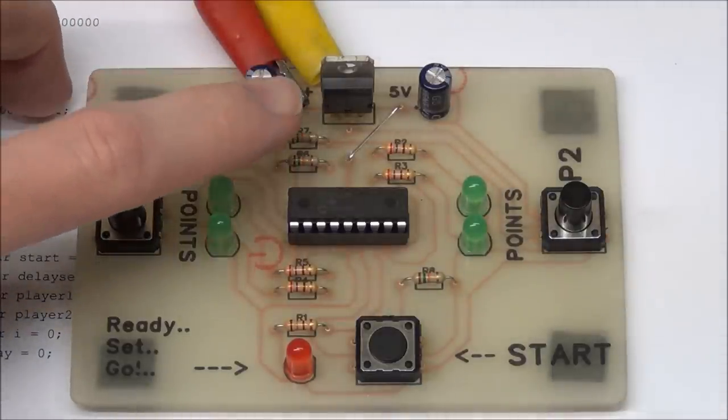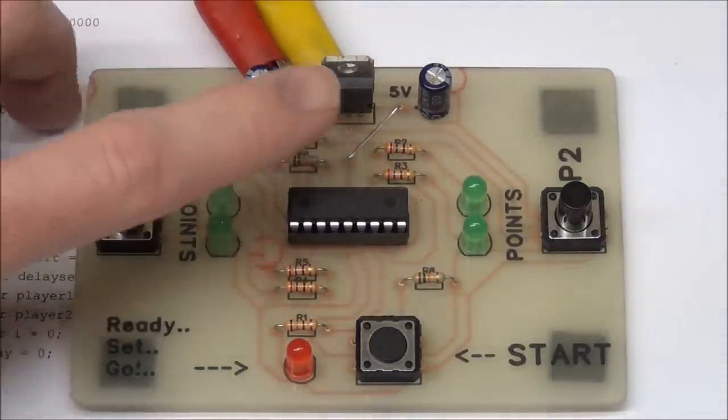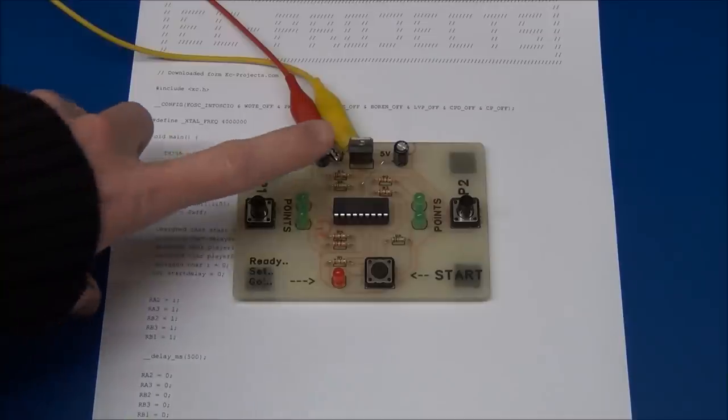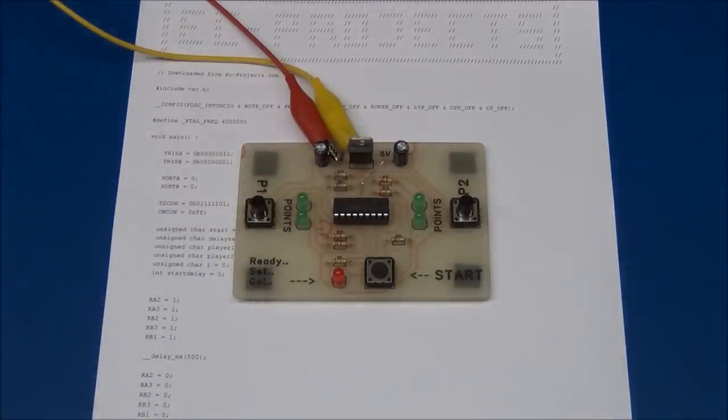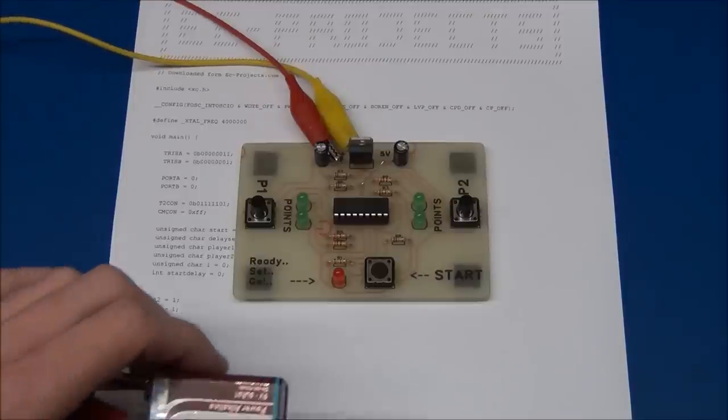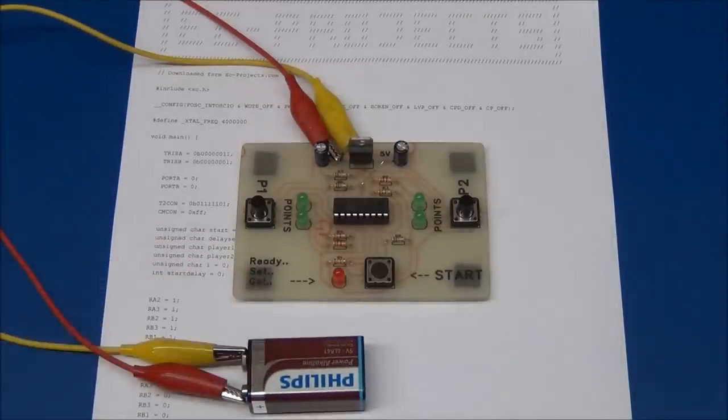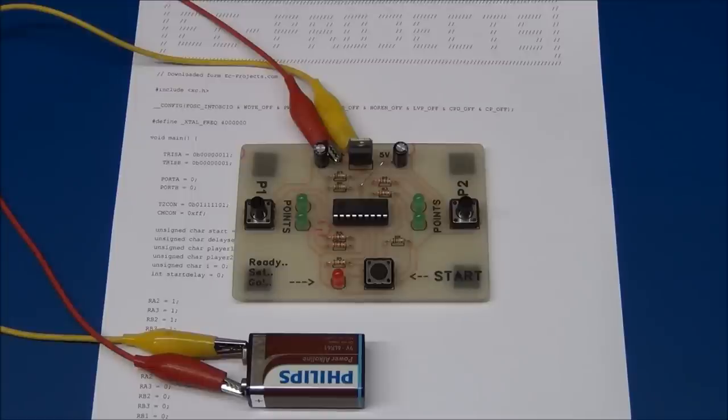And we also need a voltage regulator and two capacitors. When we've got this voltage regulator you can use anywhere from seven to over 30 volts input voltage. As an example I use a 9 volt battery. So let's take a look at the schematic and the code so we can see how to build one of these games. And everything you see here will be available on my website so you can download the code, the schematic and the board layout and everything you need to make the game yourself.